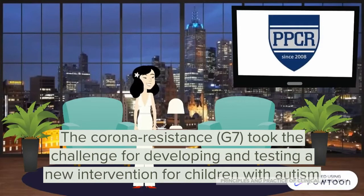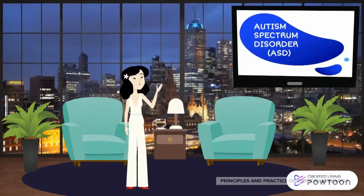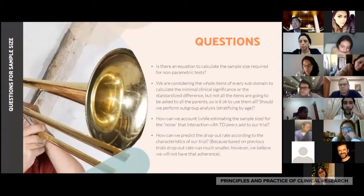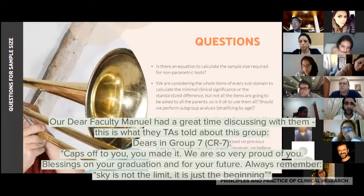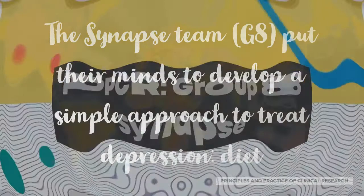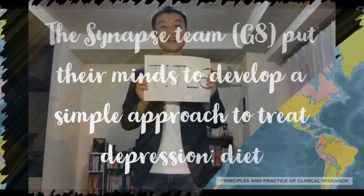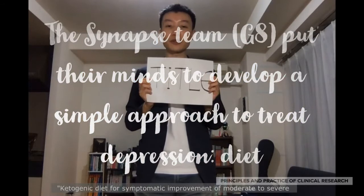Welcome to the PPCR talk show, I'm your host Frida Walters. Did you know that autism spectrum disorders, commonly known as ASD — the other thing is, like, what to do with this — dichotomize it: save improvement versus no improvement. That will make things easier. The title of our trial is: Ketogenic Diet for Symptomatic Improvement of Moderate to Severe Major Depressive Disorder — a randomized controlled phase two multi-center trial.